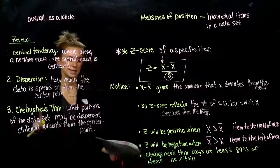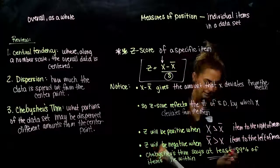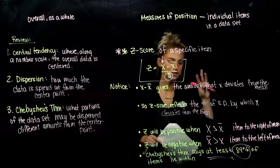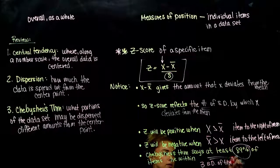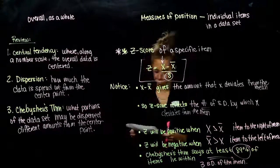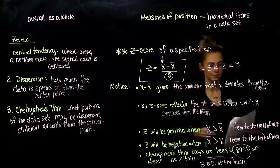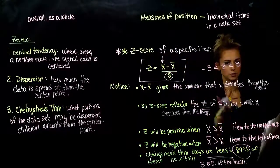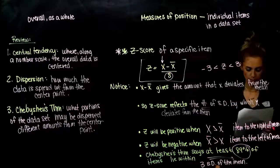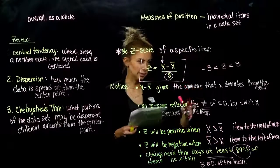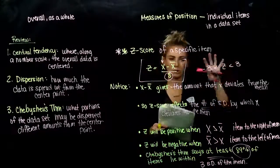Chebyshev's theorem tells us that at least 89% of items lie within three standard deviations of the mean. So Z is typically bound between negative three and positive three, because almost all of the data items fit within those three standard deviations — that's actually the minimum amount. So typically, a Z-score larger than three or less than negative three isn't going to happen, giving us an idea of what bounds are present on a Z-score.